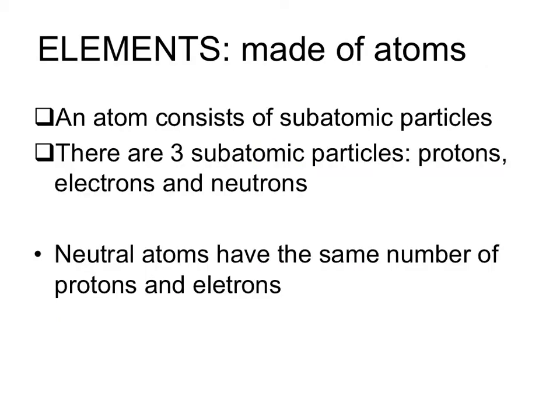In section 2.1, we learned that elements are made up of atoms. What you don't know yet is that atoms consist of subatomic particles, and there are actually three subatomic particles that you will work with: protons, electrons, and neutrons. Right now, I just want you to know that neutral atoms have the same number of protons and electrons.